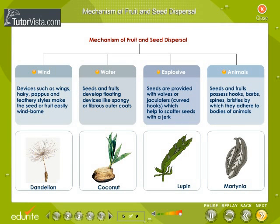Mechanism of Fruit and Seed Dispersal. There are several agents that bring about dispersal of seeds and fruits. Air, water, animals, birds, and even self-explosive mechanisms help in the dispersal of seeds and fruits.